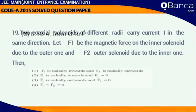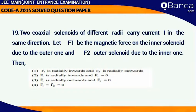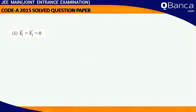Two coaxial solenoids of different radii carry current I in the same direction. Let F1 be the magnetic force on the inner solenoid due to the outer one and F2 outer solenoid due to the inner one. Then answer F1 bar is equal to F2 bar is equal to 0.